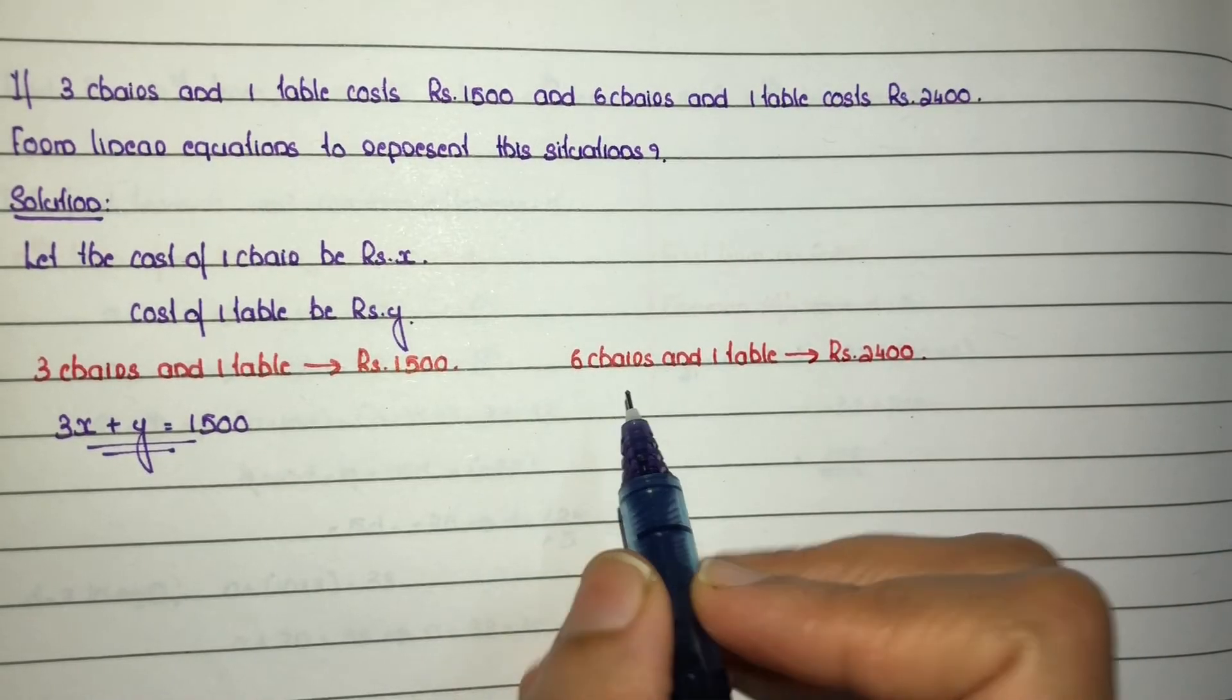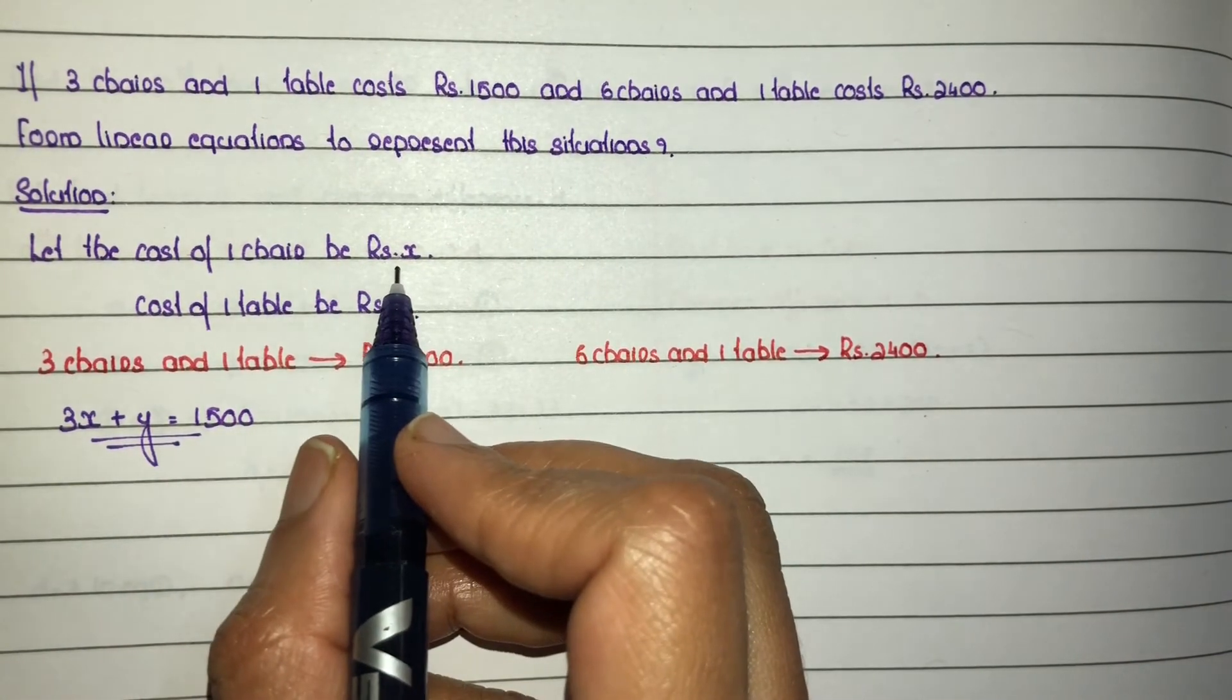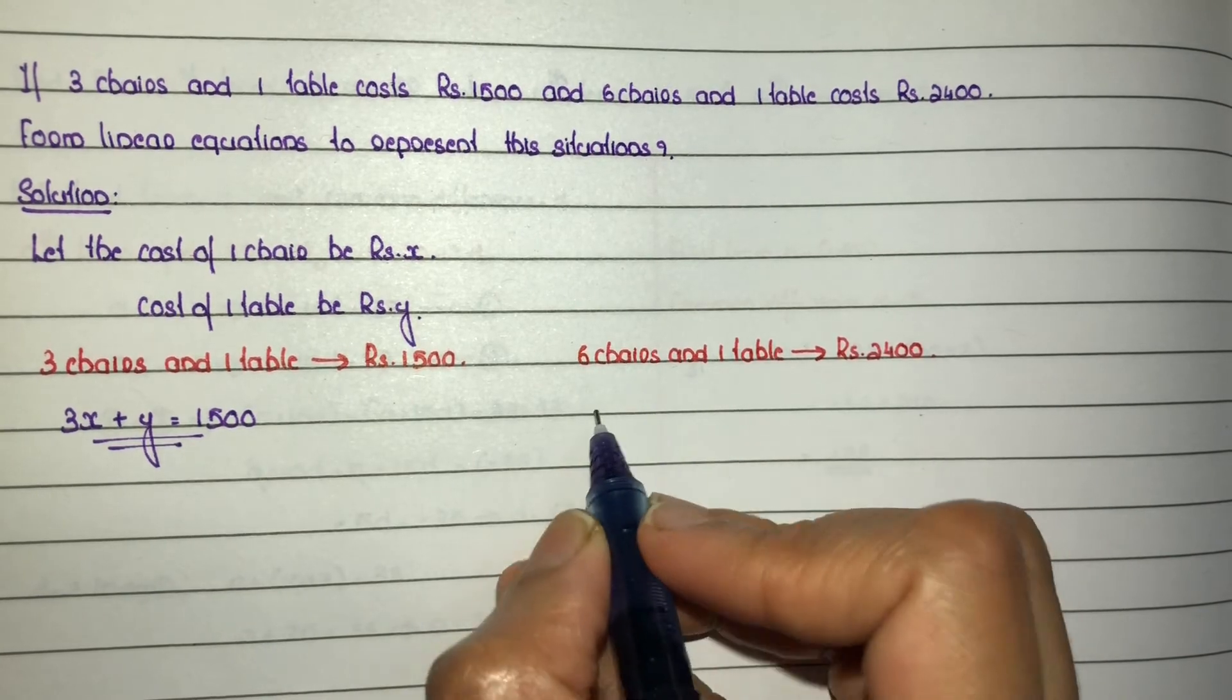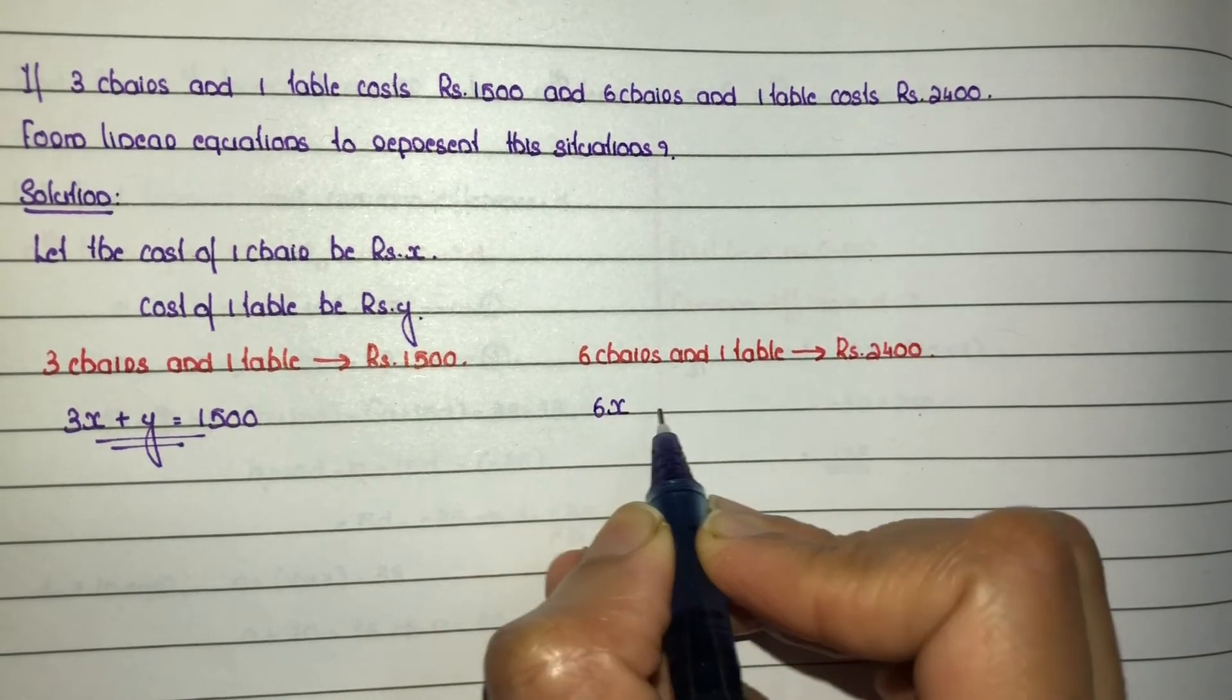So this is how we represent it: one chair costs rupees x, so six chairs cost 6x plus...